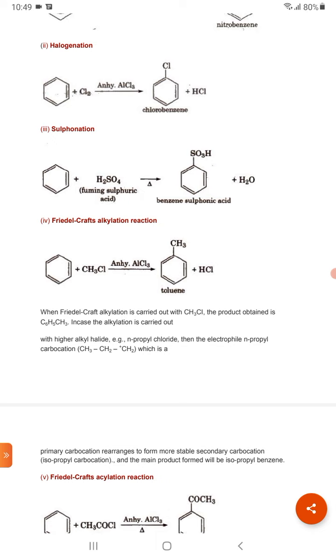Now again we will talk about sulfonation. Sulfonation will take place in presence of sulfuric acid. When benzene reacts with sulfuric acid then benzene sulfonic acid is formed.